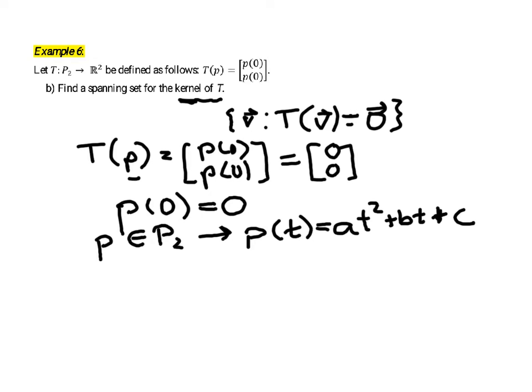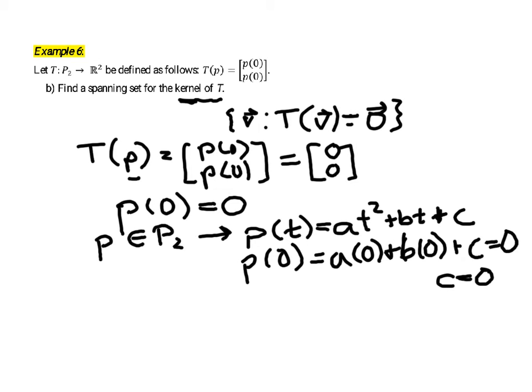All right, so we'll just take a vector of that form. Now p(0) then would be a times 0 plus b times 0—if we substitute 0 for t—plus the constant c. And so if we're looking at the kernel and we want p(0) to be 0, then the result here is that c must be 0. So for any polynomial in the kernel of this transformation, c must be 0.